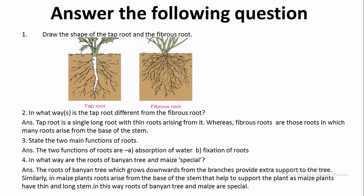The next question: In what way are the roots of the banyan tree and maize special? The roots of the banyan tree grow downwards from the branches and provide extra support to the tree. Similarly, in maize plants, roots arise from the base of the stem to support the plant, as maize plants have a thin and long stem. In this way, the roots of the banyan tree and maize are special.